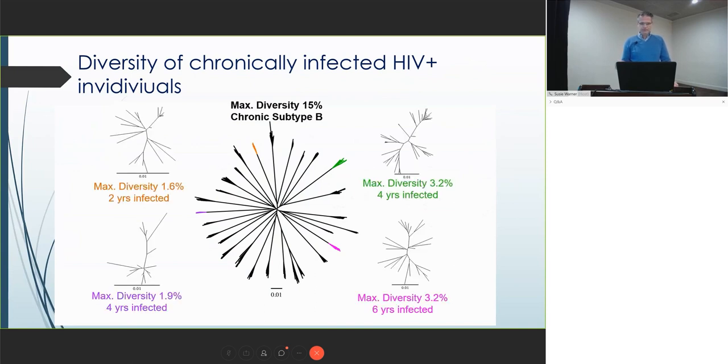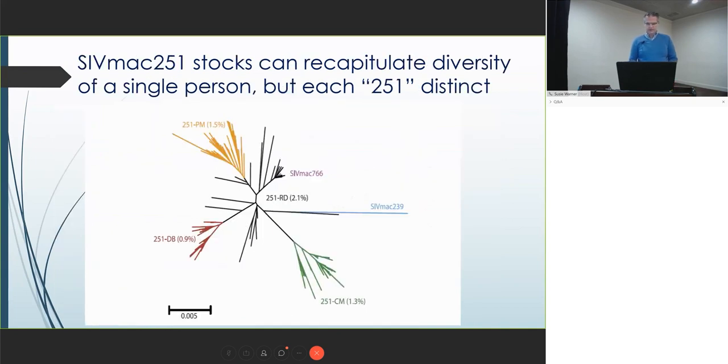This is 20-some patients with the patients who are at the tips of these trees, and the distance between each patient is the long branches. This is the diversity of just subtype B in general. And then each individual patient, shown here, the diversity is somewhere between 1 to 2 to 3 percent in the envelope gene in chronic infection. This is what we can model in a 251.